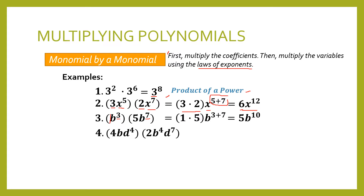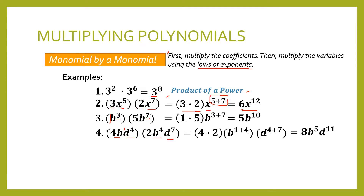Example number 4, we have two variables b and d. So we use the same procedure. We multiply first 4 and 2, and then multiply b raised to 1 by b raised to 4, and then multiply d raised to 4 by d raised to 7. When we multiply that, we have 8 times b raised to 5 times d raised to 11, or 8b raised to 5, d raised to 11.